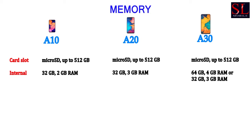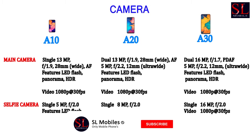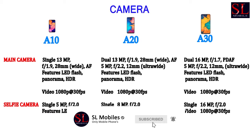The phone has 2GB RAM with 32GB storage, as well as 3GB RAM and 4GB RAM variants. The main camera has an f/1.9 lens, capable of recording 1080p at 30fps. The selfie camera has an f/2.0 lens.